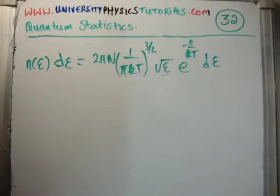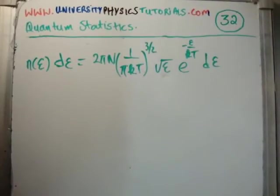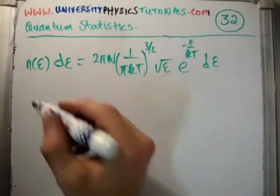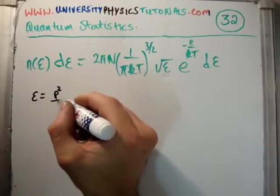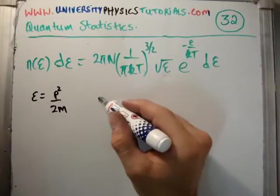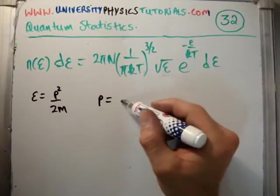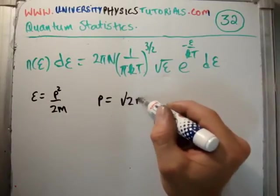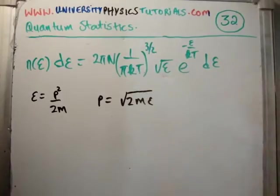Well, next, I want to scale to scalar momentum. Or, we can also scale to scalar velocity. Well, how do we scale to momentum? Well, we know that e is equal to p squared over 2m. So, that means that p is equal to square root of 2m e as well.